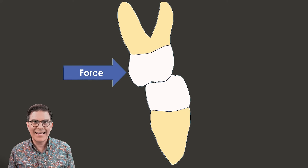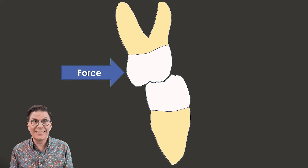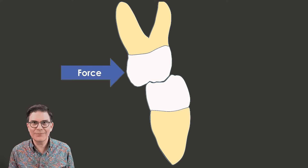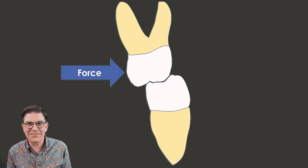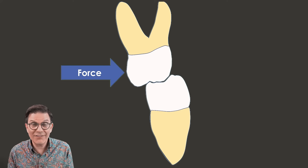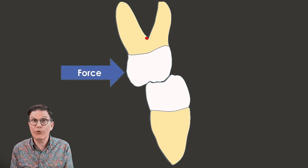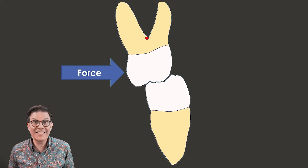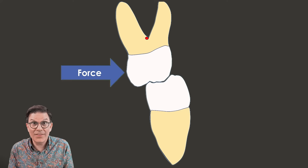Let's think about what you're actually doing: you're applying a force on an object — the tooth. This object has roots, and these roots are inside the bone. In biomechanics, every object has a center of resistance. The center of resistance is a point where, if you apply a force directly in line with it, you create a translation. For a molar, this point is approximately at the furcation level, and it's impossible to apply a force there directly. The only place we can apply a force is on the crown of the tooth.